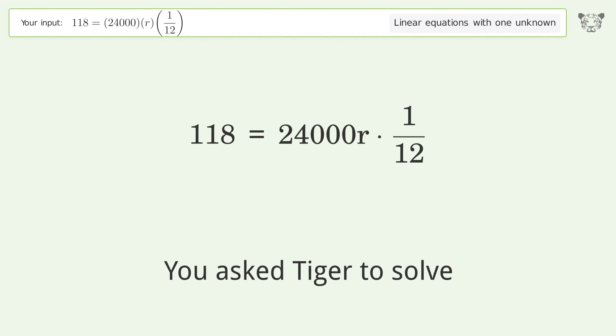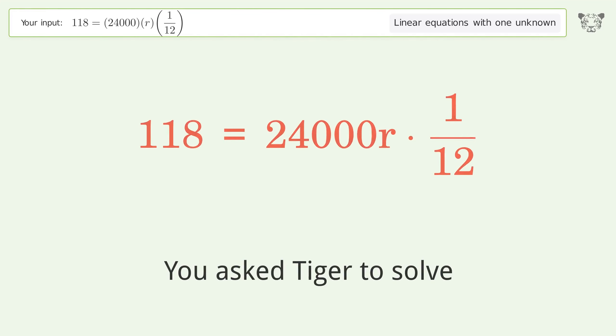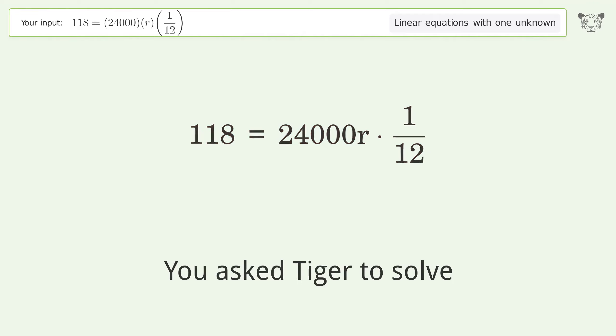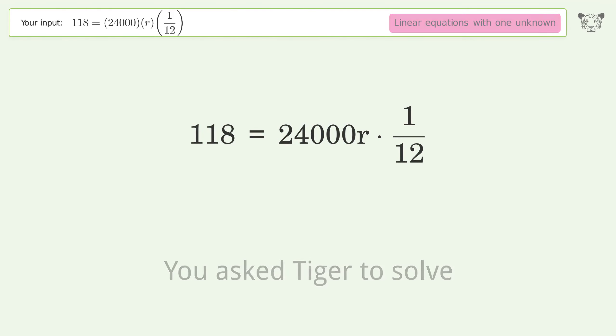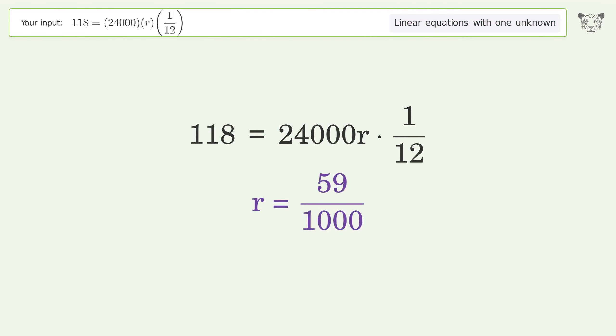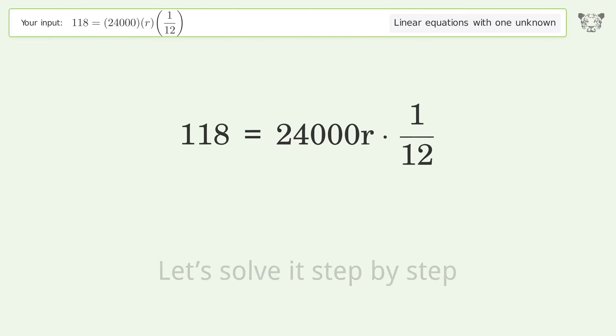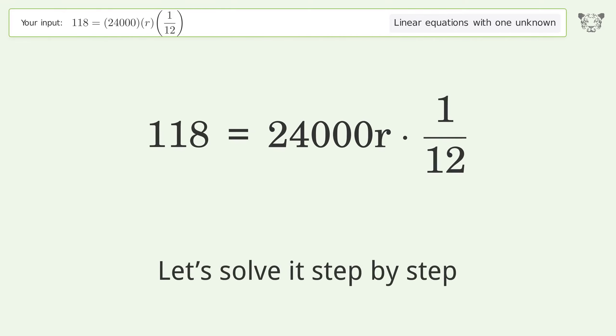You asked Tiger to solve this — it deals with linear equations with one unknown. The final result is r equals 59 over 1000. Let's solve it step by step.